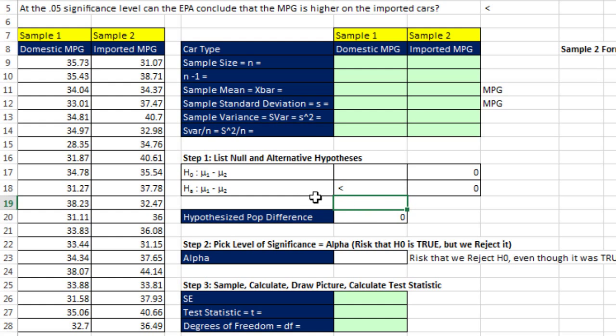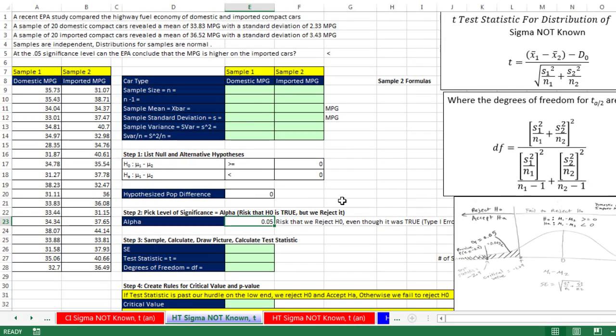Once we know the alternative, that's what we hope to conclude after our test here. Then this is the opposite. Space, and I simply flip it around. Greater than, and the equal sign always goes with the null hypothesis. Now we can come down to step 2, alpha. It was given at 0.05. Remember, that's the risk that we reject the null hypothesis, even though it was true. That would be a type 1 error.